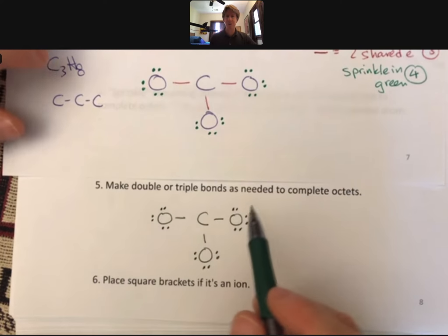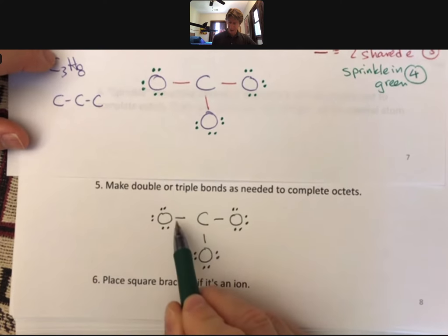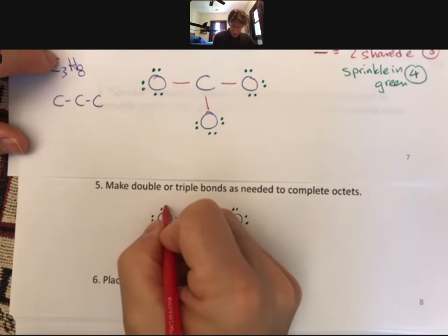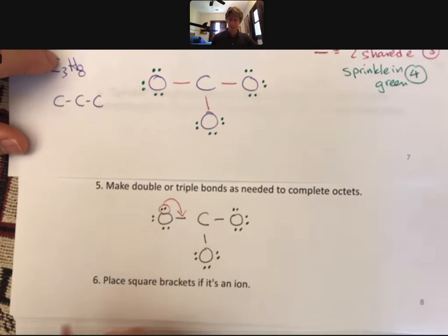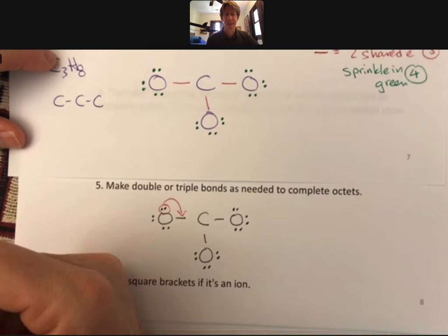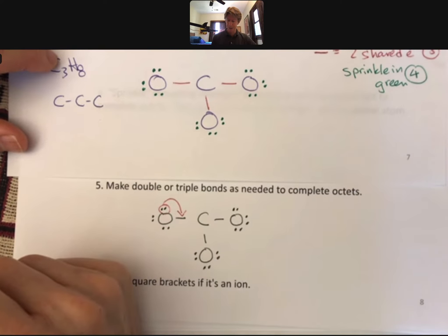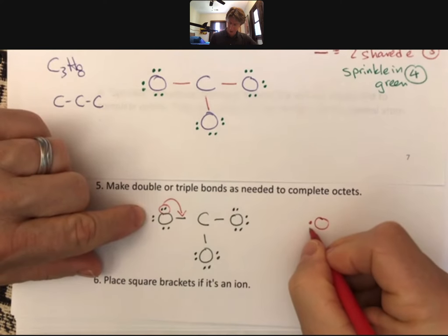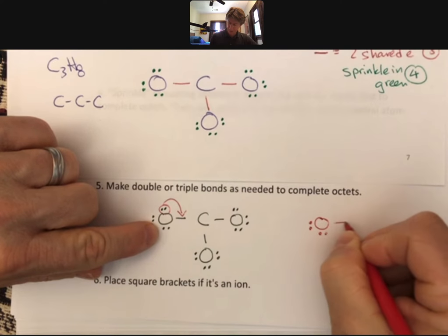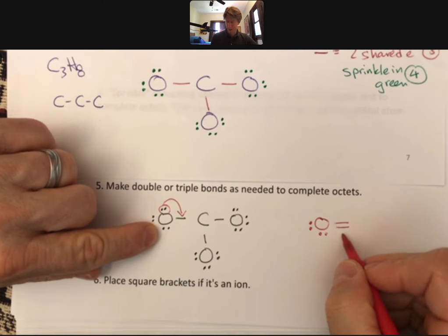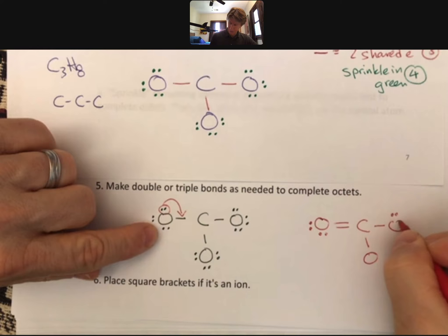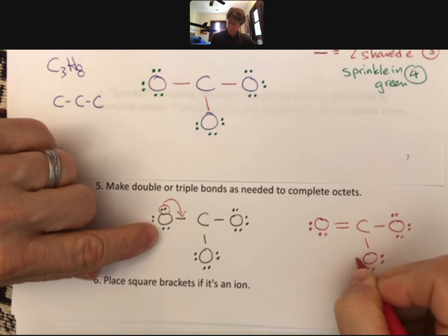So that's where we were. And step five says, make double or triple bonds as needed to complete octets. And I can choose any one of these. But here's what forming a double bond looks like. I'm going to take these two electrons, let's say, and move them over to be shared. And then I'm going to redraw the product. This is not my answer. My answer will say, oh, and I've still got a pair of electrons there. I've still got a pair of electrons there. And now I have two pairs of electrons. And the rest, I'm just going to draw exactly as it was. Like so.